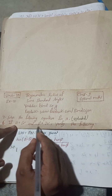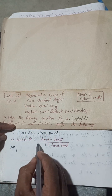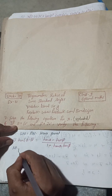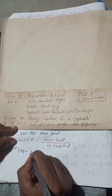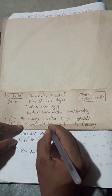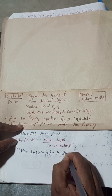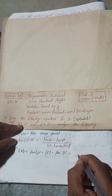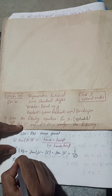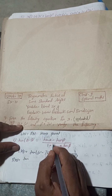If alpha is equal to 60 degrees and beta is equal to 30 degrees, verify the following: tan(α − β) = (tan α − tan β) / (1 + tan α · tan β). LHS is equal to tan(α − β), where alpha is 60 degrees and beta is 30 degrees, so this is tan(60 − 30) = tan 30°, which equals 1 by root 3.